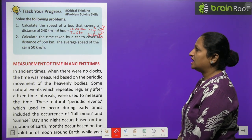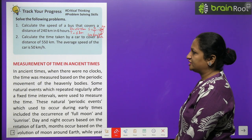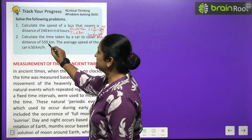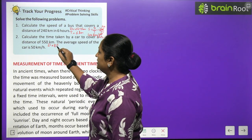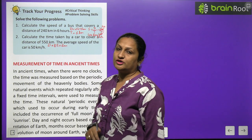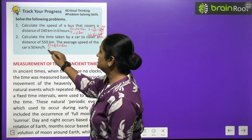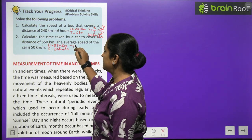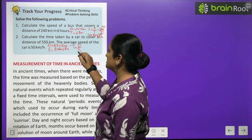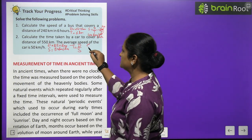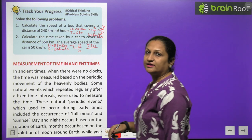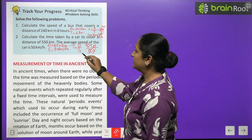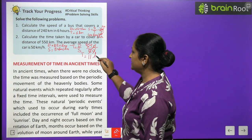Calculate the time taken by a car to cover a distance of 550 km, given that the average speed of the car is 50 km per hour. Here, distance is 550 km and speed is 50 km per hour. Time equals distance divided by speed, so 550 divided by 50 gives a time of 11 hours.